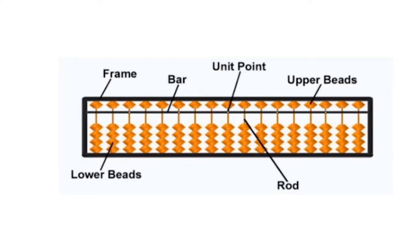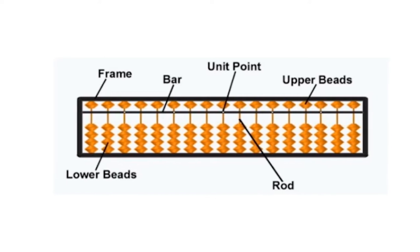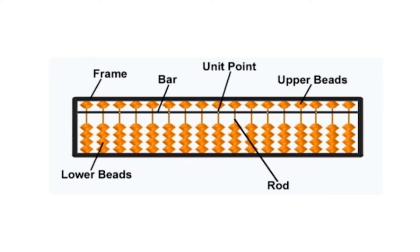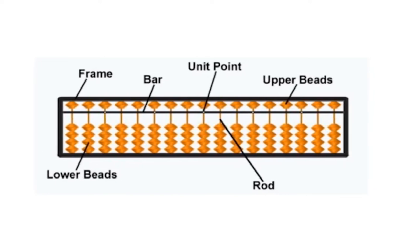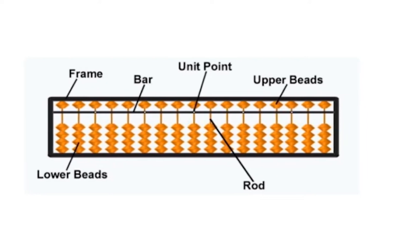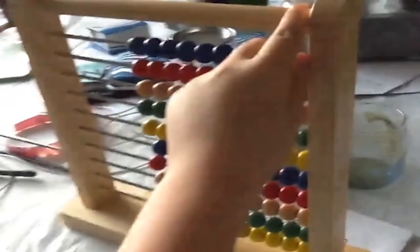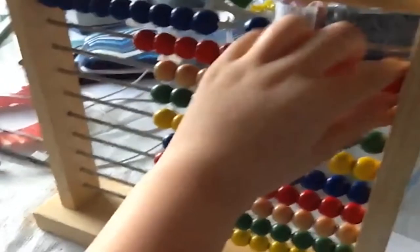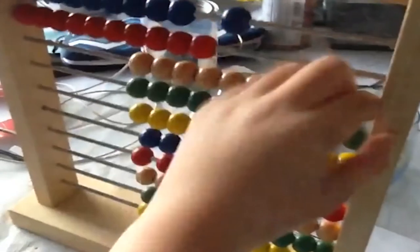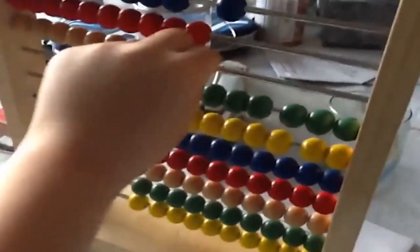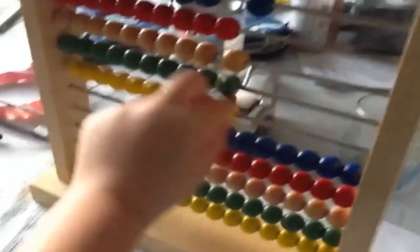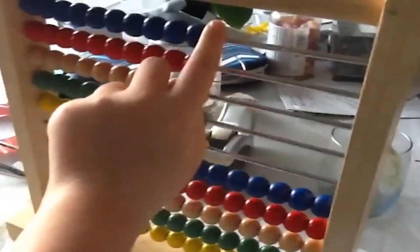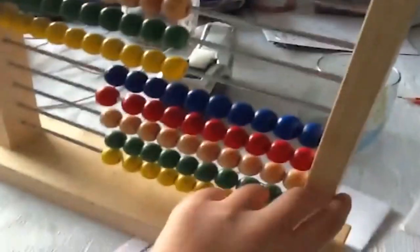Setting: The process of moving a bead of the lower abacus or the upper abacus towards the separation bar is called setting. Clearing: The process of moving a bead away from the separation bar, either towards the top of the upper abacus or the bottom of the lower abacus, is called clearing.